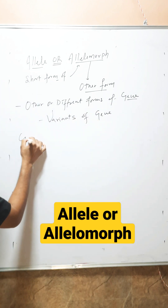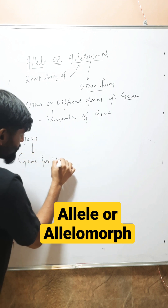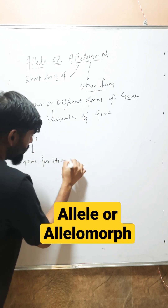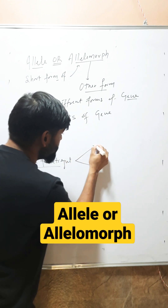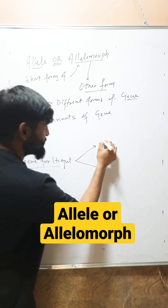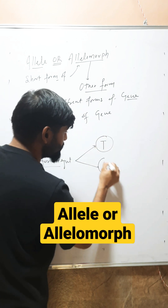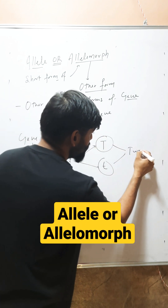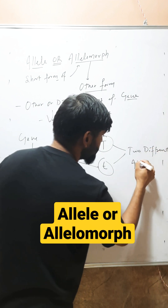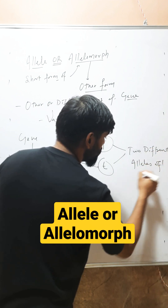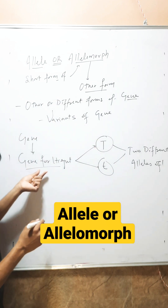For example, I have a gene that is the gene for height. This gene for height has two variants or two different forms — that is capital T and small t. These are two different alleles of the gene for height.